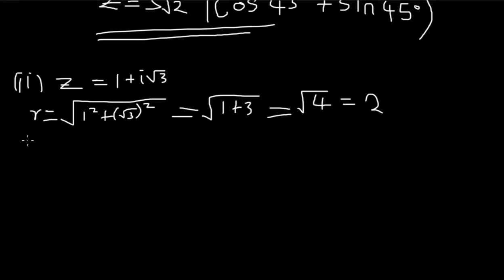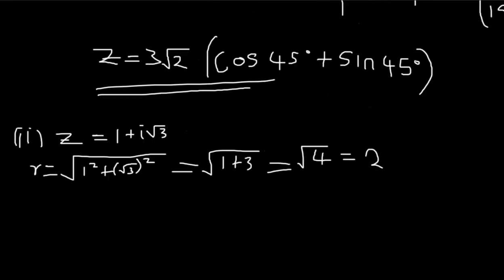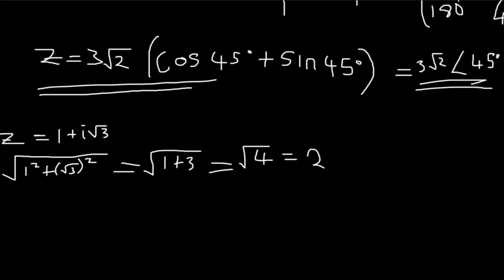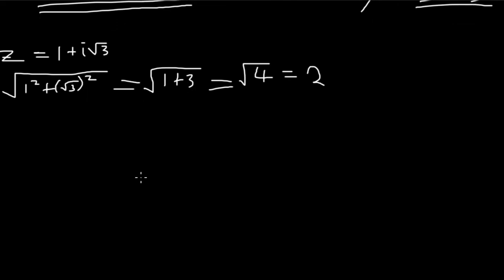θ is also known as the argument of z. Let me also show you another way of expressing this complex number in polar form. Instead of writing the full cosine-sine expression, you can write z = 3√2 ∠ 45°. This is another way of writing a complex number in polar form, but at Murungush University they prefer the cosine-sine form, so use that one in exams.